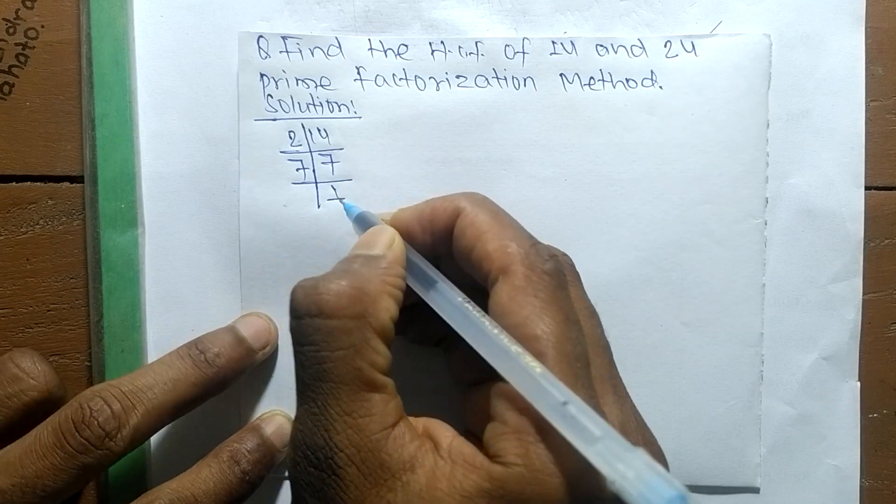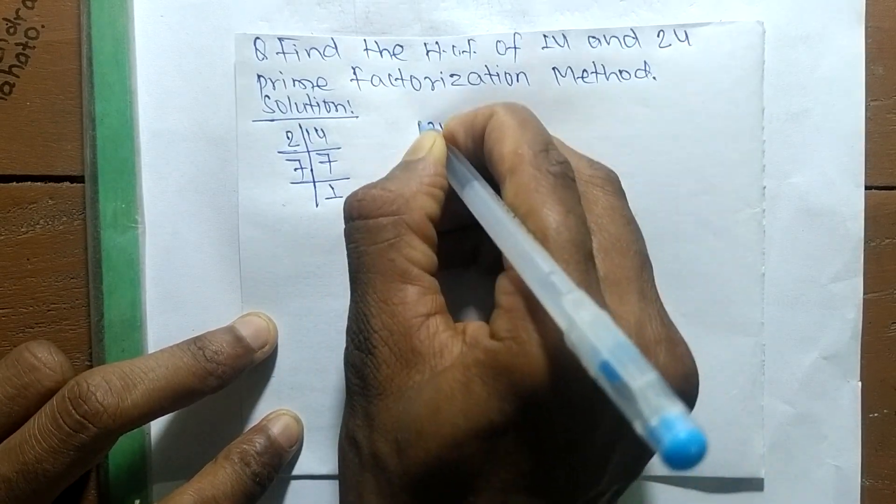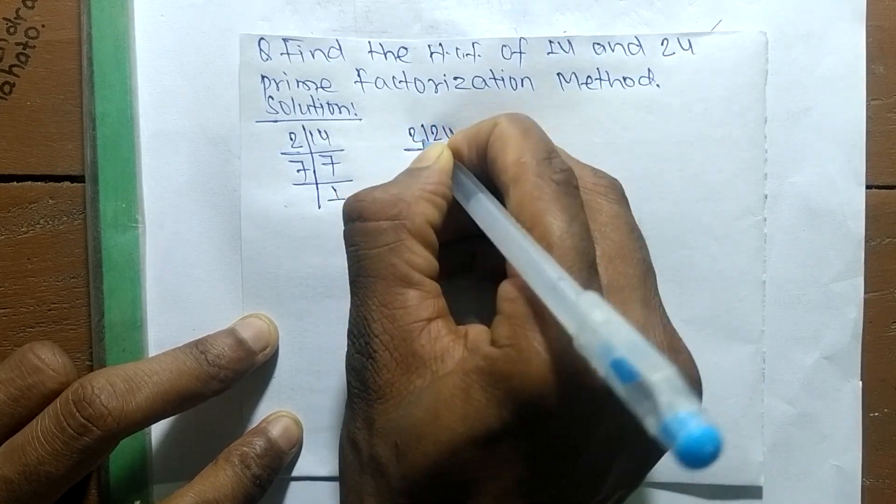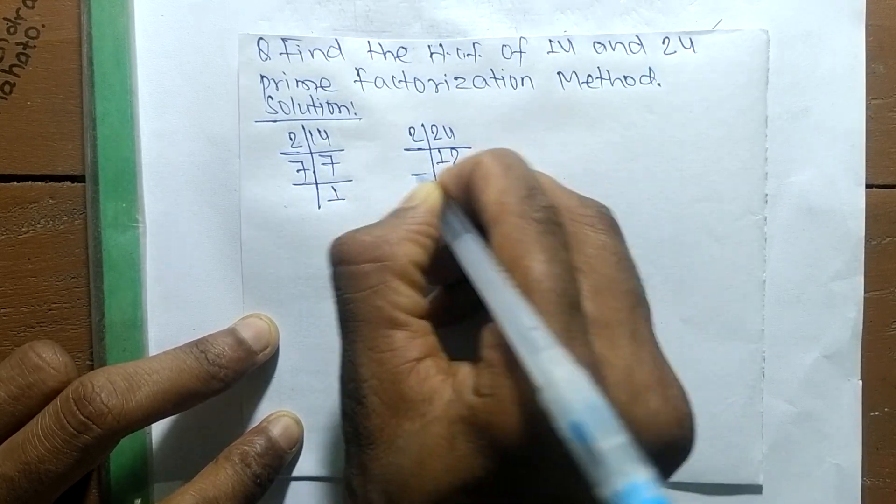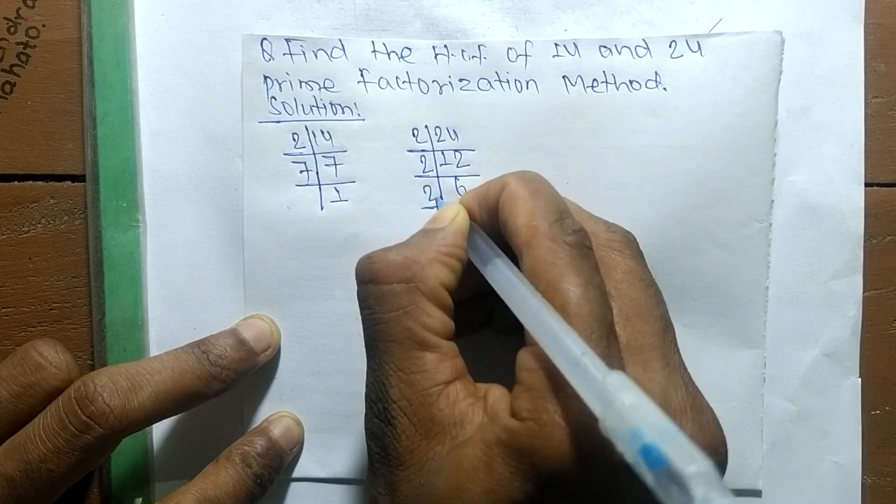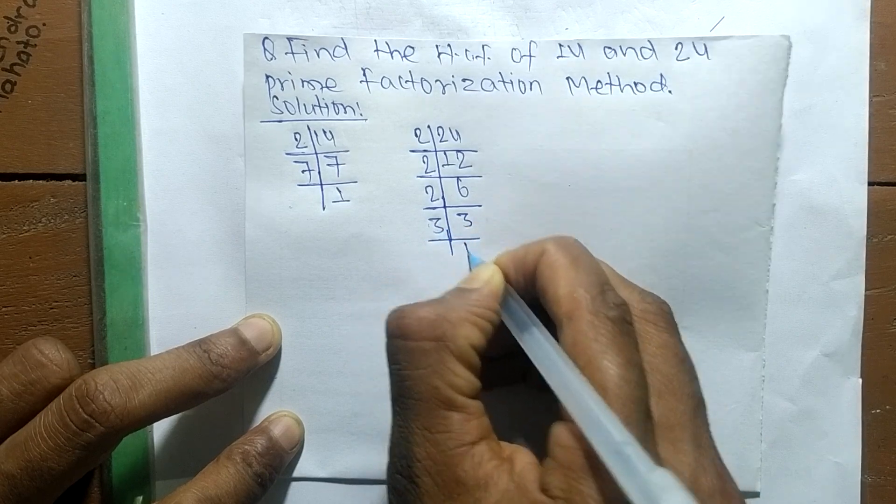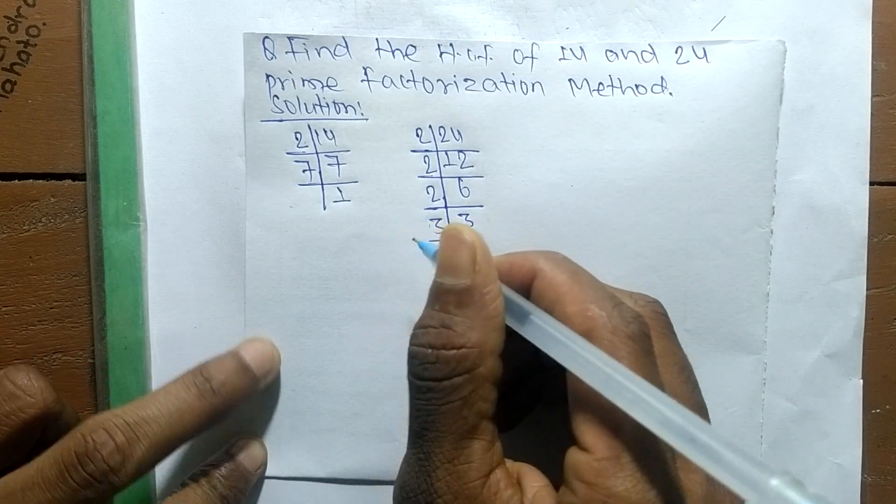In the same way, the prime factors of 24 are: 2 times 12 equals 24, 2 times 6 equals 12, 2 times 3 equals 6, and 3 times 1 equals 3.